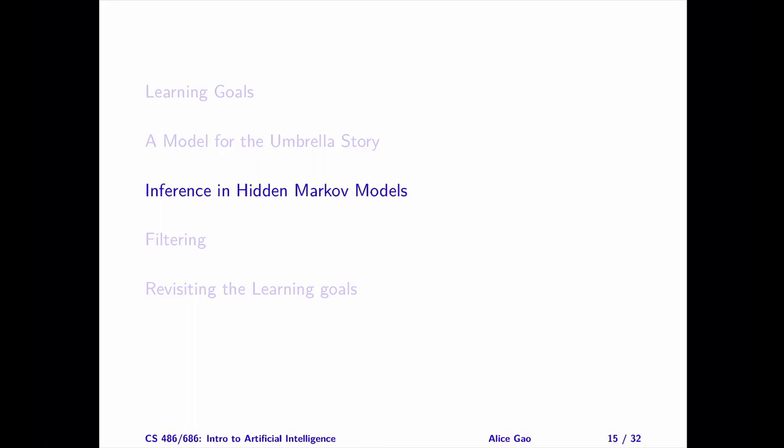That's everything on the inference tasks. Let me summarize. After watching this video, you should be able to do the following: describe the four common inference tasks for a hidden Markov model, explain why we need to perform smoothing in addition to filtering, and name the two algorithms for performing inference in a hidden Markov model.